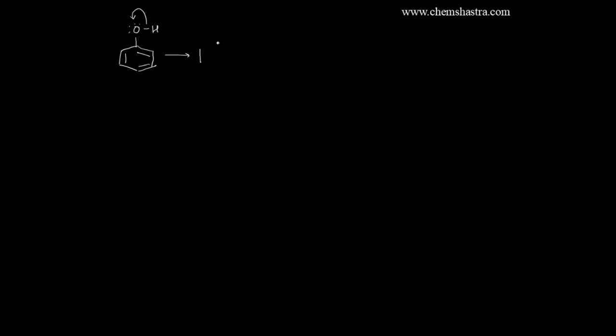What I can do is dissociate this oxygen-hydrogen bond. It's a polar bond which can dissociate easily in favor of the oxygen atom, as oxygen is more electronegative than hydrogen. After dissociation, you will have the benzene structure with alternating single and double bonds intact, and a negative charge on the oxygen. The hydrogen leaves as a proton (H+ ion), and we get an anion called the phenoxide ion.